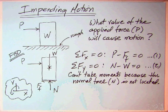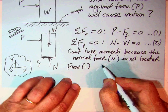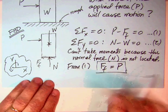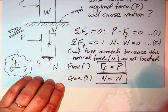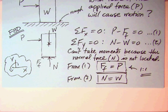And then what about moments? I can't take moments because the normal force n is not located. We kind of know where w is and where P is, and we know the line of action of F_f, but we do not know where n is. From equation one, we get that the friction force matches the force that we're applying. It matches it one to one. Whatever you push on, the friction force matches that up to a point.